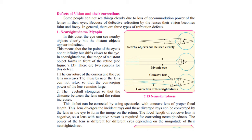Myopia can be corrected by using spectacles with a concave lens. A concave lens diverges the rays, and the diverged rays can then be converged by the eye lens to form the image on the retina. The focal length of a concave lens is negative, so a lens with negative power is required. The exact power depends on the magnitude of the person's nearsightedness.